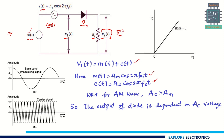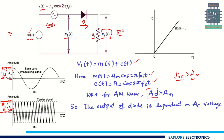V1(t) is the addition of M(t) and C(t). We know that Ac is the amplitude of the carrier wave, and we are going to maintain it as more than the amplitude of the modulating signal Am. Since Ac is more than Am, the total amplitude will be the addition of Am and Ac, so the diode output will depend on the carrier wave. If the carrier wave is greater than zero, the diode will be forward biased. When the carrier wave is less than zero, the diode is reverse biased.